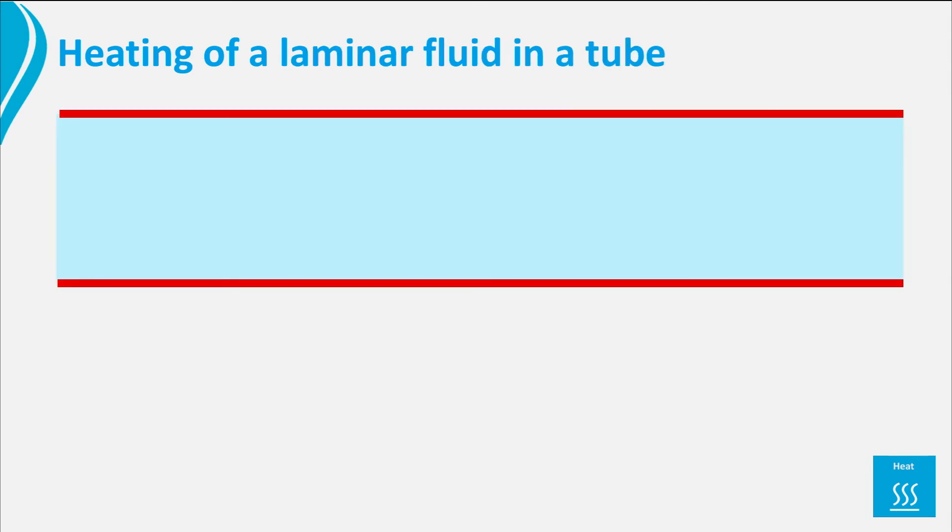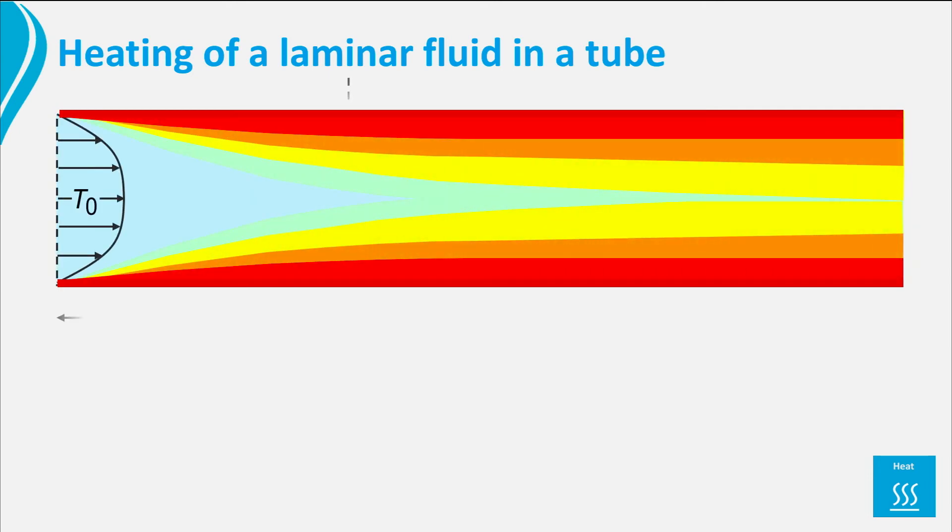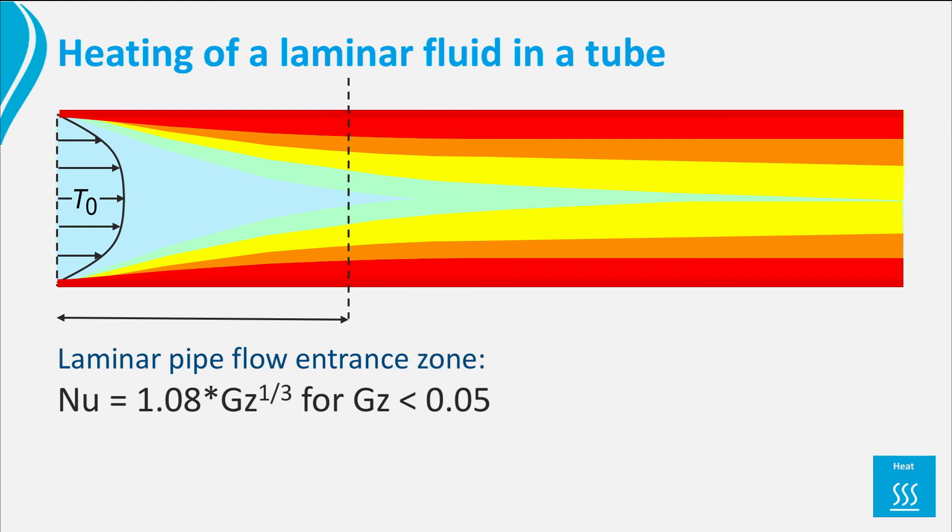The problem becomes more complex because the fluid in the pipe is not well mixed and it will take some time before the temperature distribution in the cross-section does not change anymore. So in the beginning of the pipe the heat transfer coefficient is dependent on the distance of the entrance of the pipe and dimension analysis shows that the Nusselt number for laminar pipe flow is dependent on the so-called Graetz number. You see immediately that this dimensionless number depends on the distance x from the inlet of the pipe.